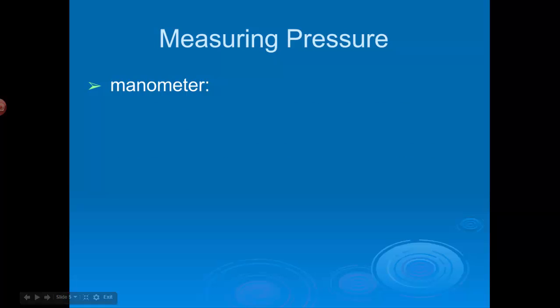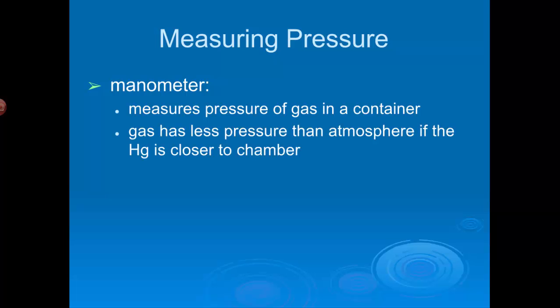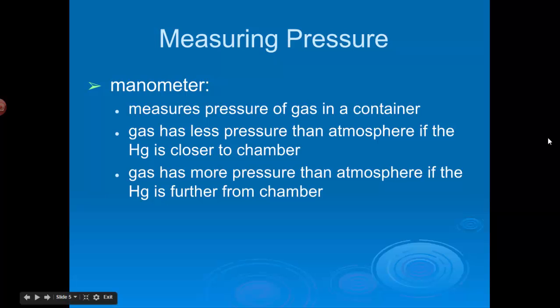If you want to measure the gas, the pressure of a gas in a container, you use a manometer. And essentially, a manometer is open to the atmosphere, but it measures not the pressure of the atmosphere, it measures the pressure of gas inside a container. And I'll show you a picture of this, but basically, if the gas has less pressure than the atmosphere, the mercury moves towards the chamber, the atmosphere pushes the mercury towards the chamber, and vice versa.